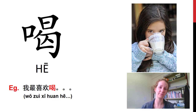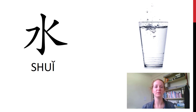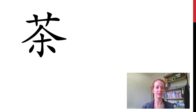我最喜欢喝. Let's learn the drinks — 饮料. 第一个, 你知道吗? 这是水。水。 We learned this from 水果, fruit. Remember that one. 我最喜欢喝水。